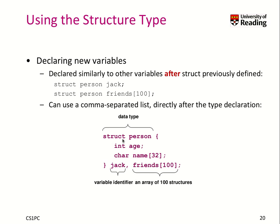Here we create an array of 100 friends of this type person. While it's possible to declare the type of the structure and directly use it to declare variables with it, I would not recommend to do so. But this is a very typical syntax that you will find in code. Both variable identifiers have the type struct person.